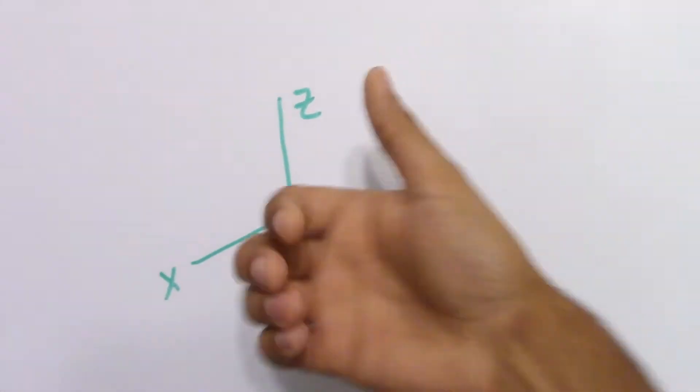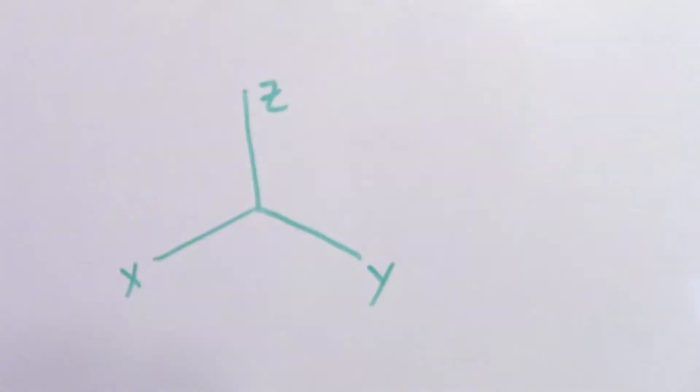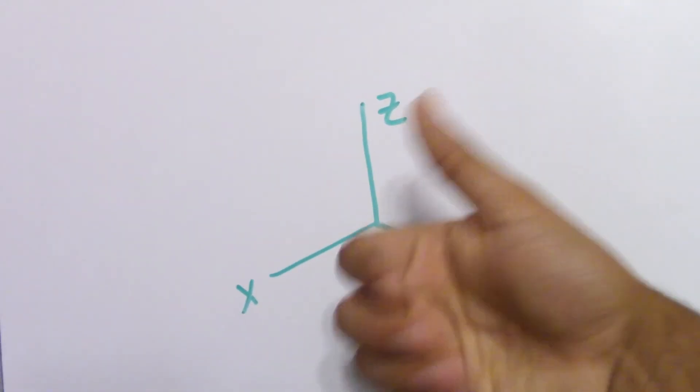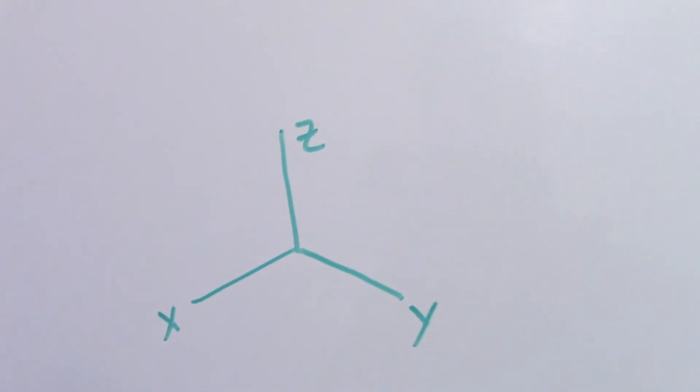So we got i cross j gives you positive k. You can use this on your exam or your homework just to reorientate yourself in the correct way and solve problems. So i cross j gives you k. That way you can always define your axes in the correct manner.